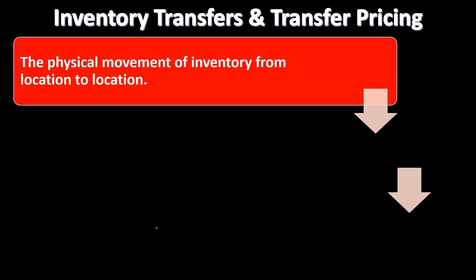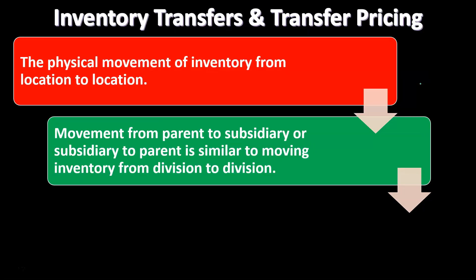In essence we're talking about inventory going from one organization to another. We can think about this in terms of parent-subsidiary relationships. When we think about the consolidation process, we have inventory going from one entity to another, and we need to understand how to account for those transfers. The physical movement of inventory from one location to another — that's going to be the inventory transfer.